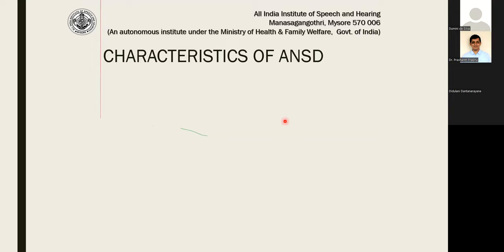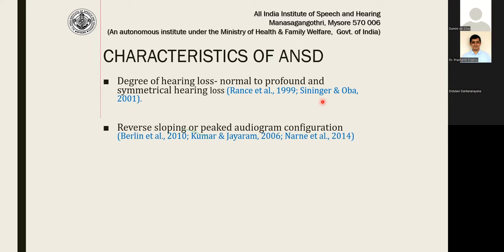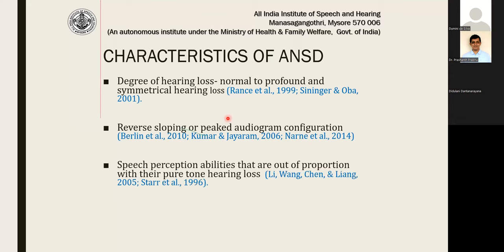Looking at the audiological characteristics: degree of hearing loss can range from normal to profound — usually symmetrical, rarely asymmetrical or unilateral. The common audiogram configuration is a reverse sloping or peak audiogram, with more loss at low frequency, better hearing at mid frequency, and slightly more loss at high frequency. Speech perception abilities are out of proportion to pure tone loss — with a mild loss, they may get around 0 to 20% speech identification scores, which is abnormal. Disproportionate speech identification scores are an indication of ANSD.